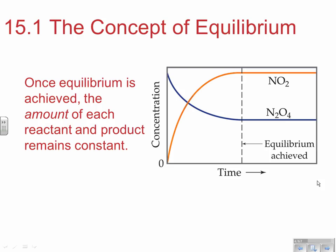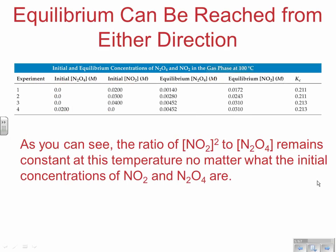At equilibrium, as many reactants are going to products as products are going to reactants, so concentrations become constant. Concentration being constant is not the same as concentration being equal. Notice these two lines when we reach equilibrium — concentration stops changing, but the two concentrations are not equal. It would be rare that concentrations actually become equal, but it is always true that rates become equal at equilibrium.